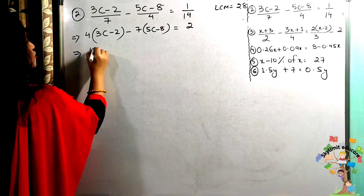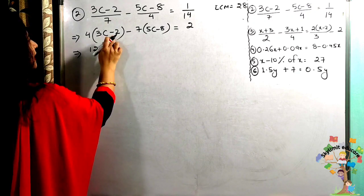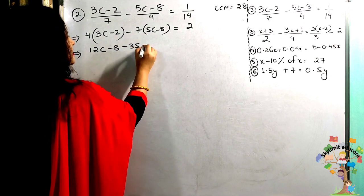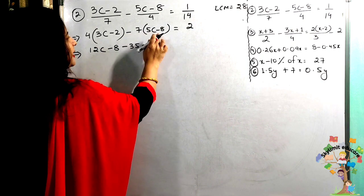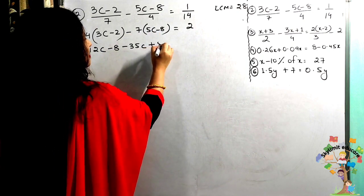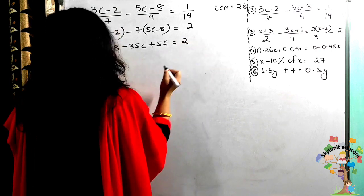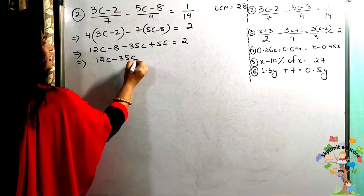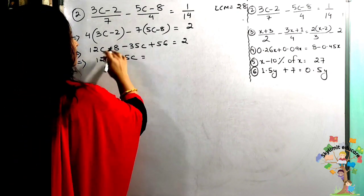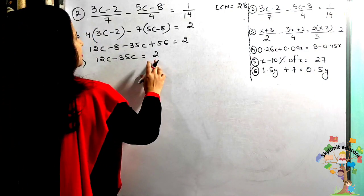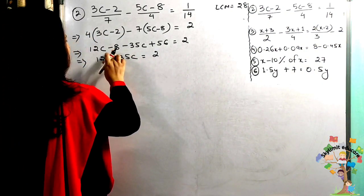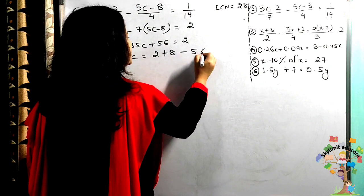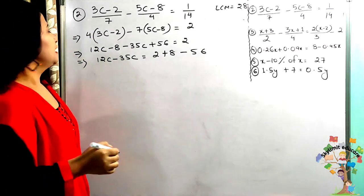Expanding: 4 × 3c = 12c, 4 × (−2) = −8, −7 × 5c = −35c, −7 × (−8) = +56. That equals 2. Now keeping like terms together: 12c − 35c, and shifting the numbers — −8 becomes +8 on the right, +56 becomes −56 on the right.